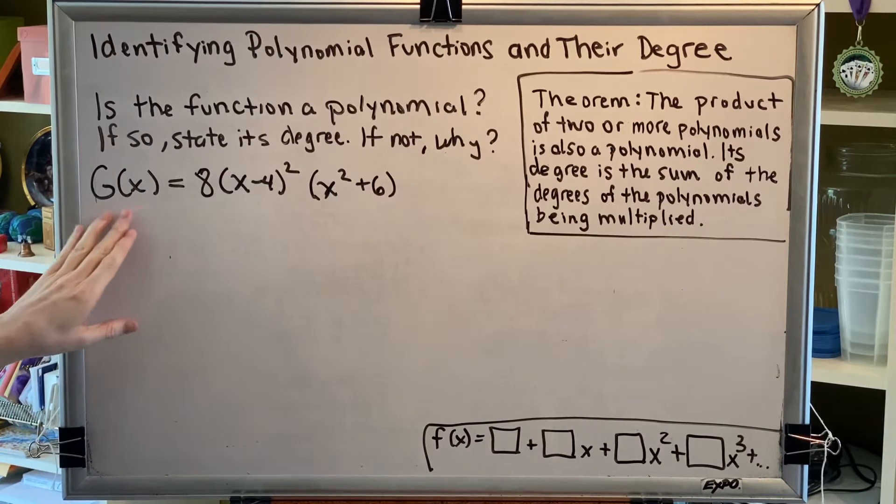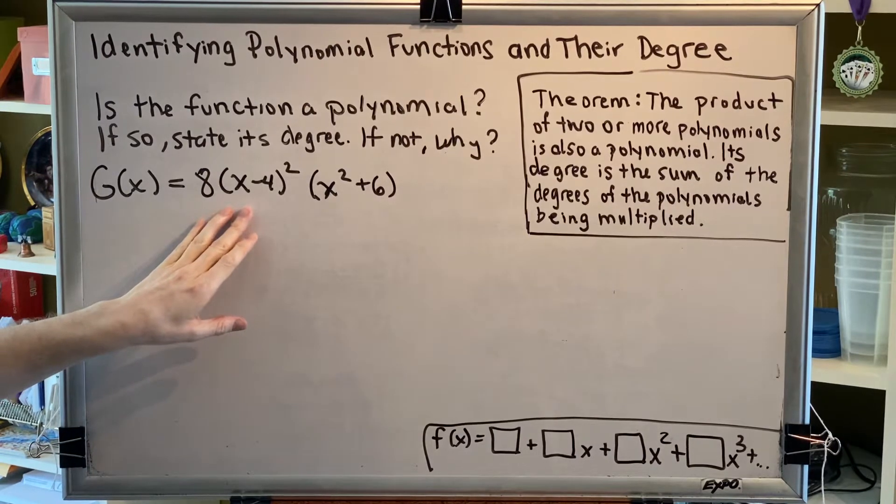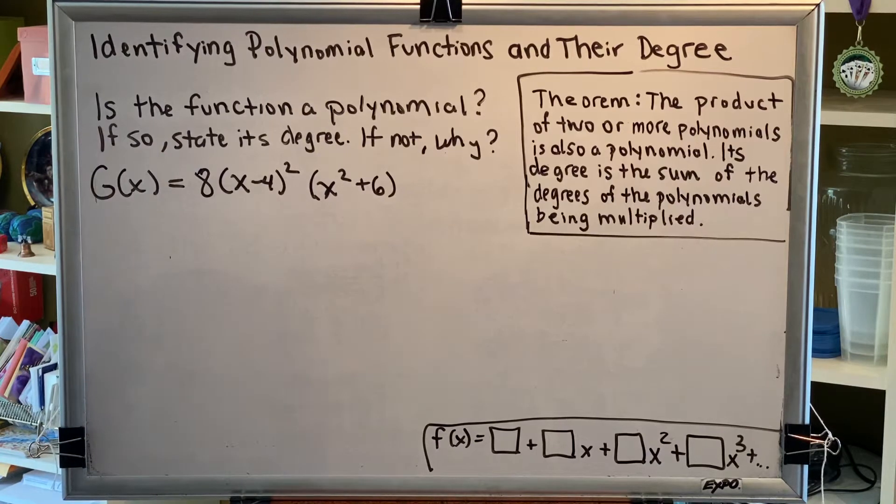Our function is g of x equals 8 times (x minus 4) squared, times (x squared plus 6).